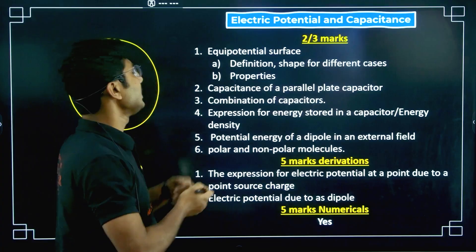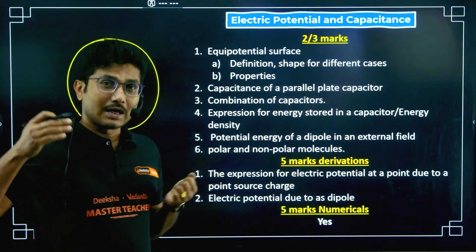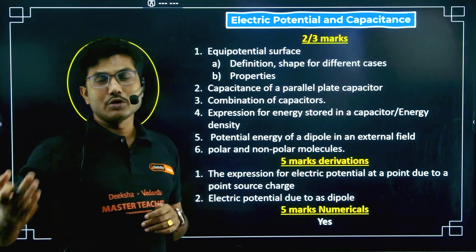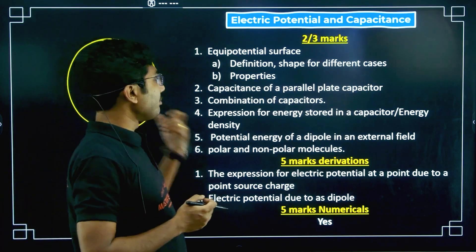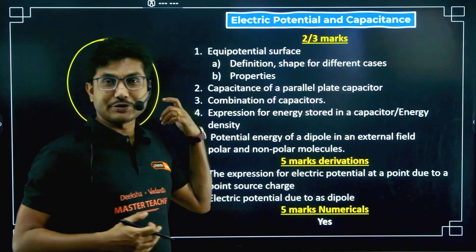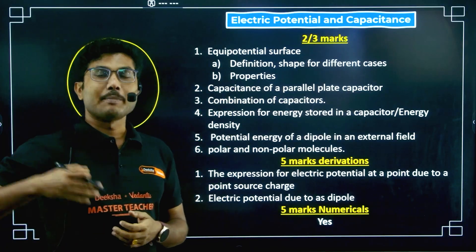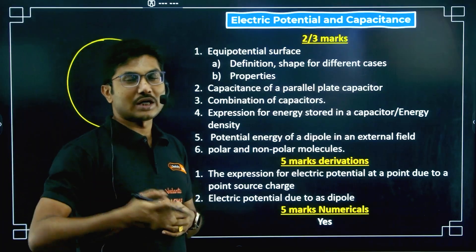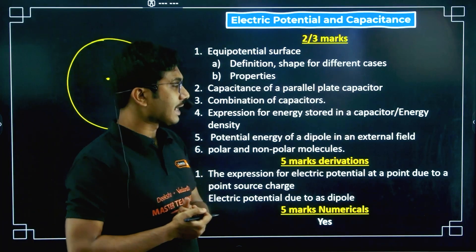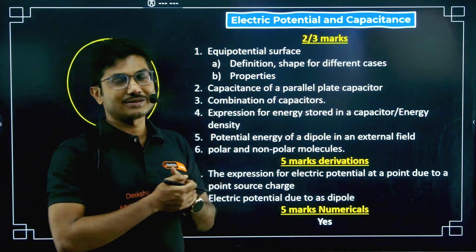Capacitance of a parallel plate capacitor — the derivation and formula — and using the formula you have to solve some questions as well. Combination of capacitors: series combination and parallel combination both will come as two-mark or three-mark derivations — it will not be a five-mark derivation. Expression for energy stored in a capacitor and energy density of a capacitor — you just need to write the expression and explain the terms.